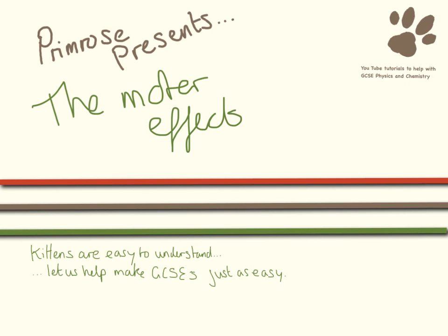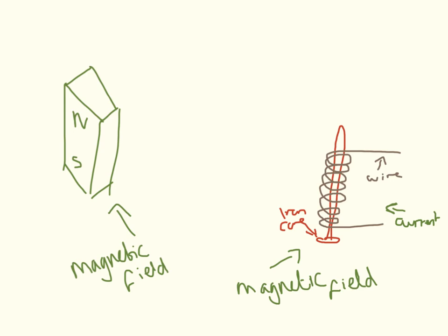Hello and welcome to this video where we're going to be looking at the motor effect. In my video on magnetic fields, I showed you that a magnet has a magnetic field and that we can create a magnetic field if we have an iron core, wrap a wire around it, and pass a current through it.